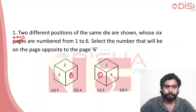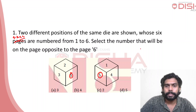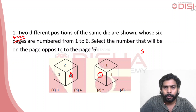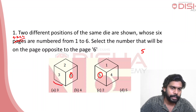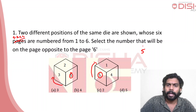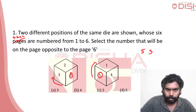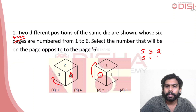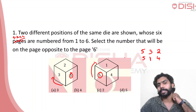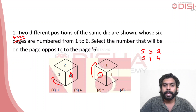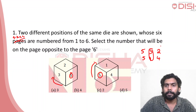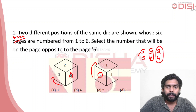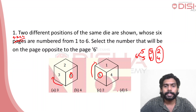With common number 5, we identify the pairs. One is opposite to three, two is opposite to four. The remaining pair: six is opposite to five. So the answer is 5.